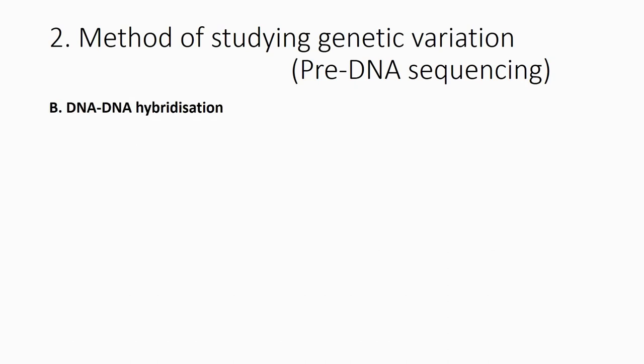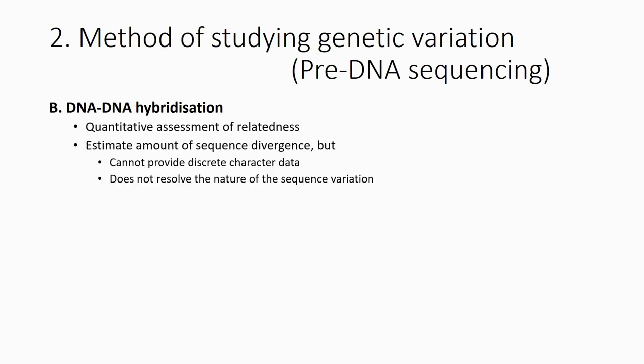After that there is DNA hybridization. It is a quantitative assessment of relatedness — they can estimate the amount of sequence divergence, meaning the difference. But they cannot say exactly what the differences are, where they are, or how much different. They know how much is different but not exactly where or what the difference is, so they do not resolve the nature of the sequence variation.